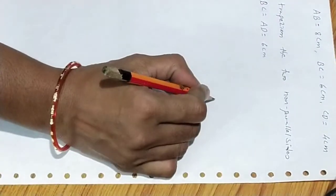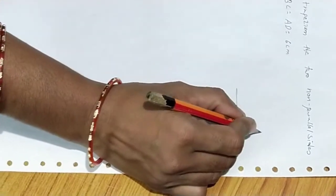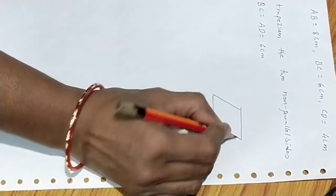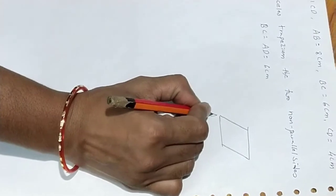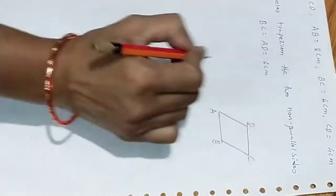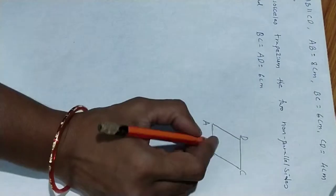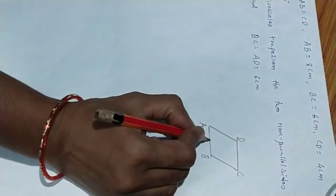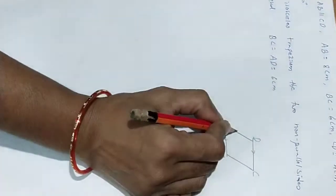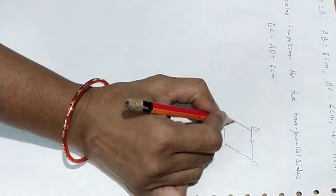Now draw the rough sketch of trapezium ABCD. Here, AB is parallel to CD. These two are the non-parallel sides. In an isosceles trapezium, these two non-parallel sides are equal. Now construct it.